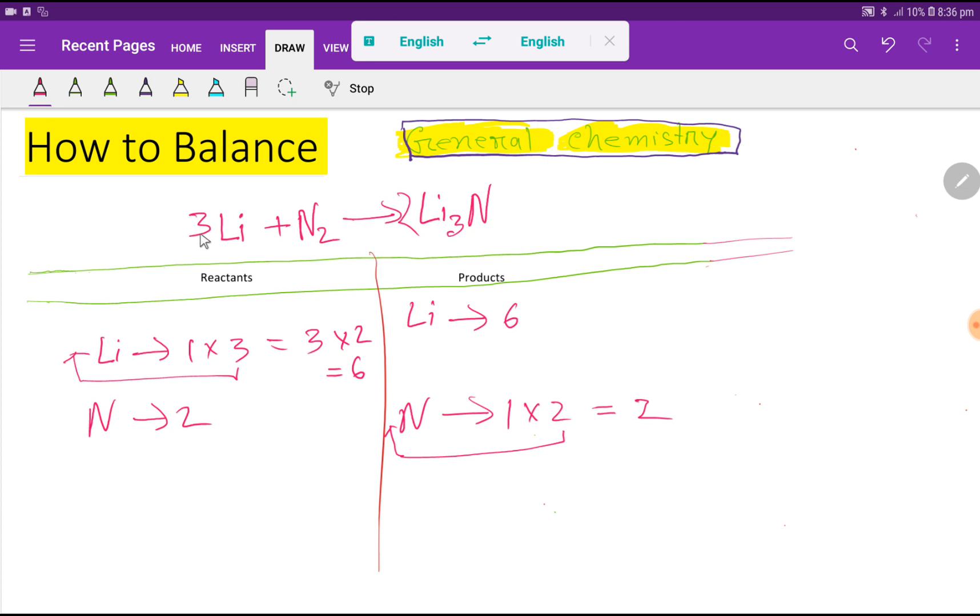Look, 6, 6 lithium, 6 lithium, 2 nitrogen, 2 nitrogen. Everything is balanced, right? So you can say that this is the balanced reaction.